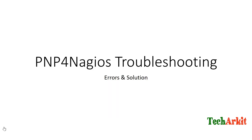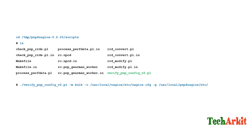Now let's cover troubleshooting. Here are the errors captured while installing PNP for Nagios and their solutions. To verify the installation is correct, navigate to the PNP for Nagios folder under the scripts directory, list the files, and you will see verify_pnp_config.pl version 2. Run it specifying bulk mode, the nagios.cfg path, and the PNP for Nagios path — it will verify the configuration and report any issues.